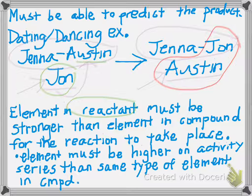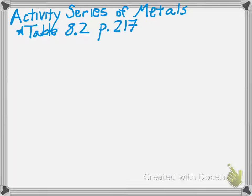Going back to our dancing example: if Austin was stronger than John, then John wouldn't have been able to dance with Jenna, and we wouldn't have had a reaction take place — no change of bonds. So the element must be higher on the activity series than the same type of element that is in the compound.